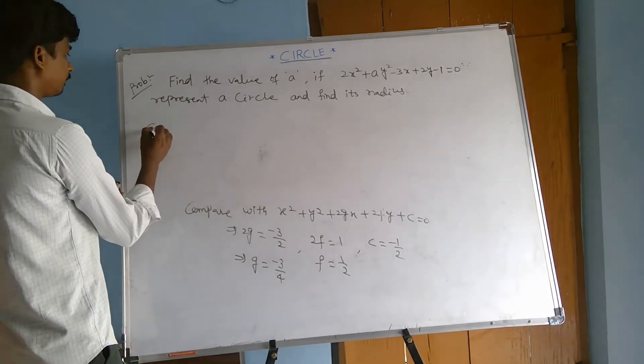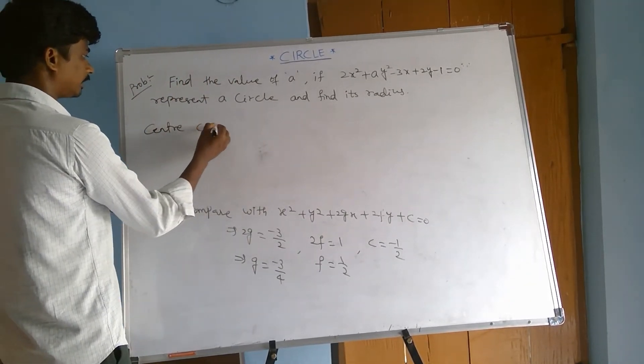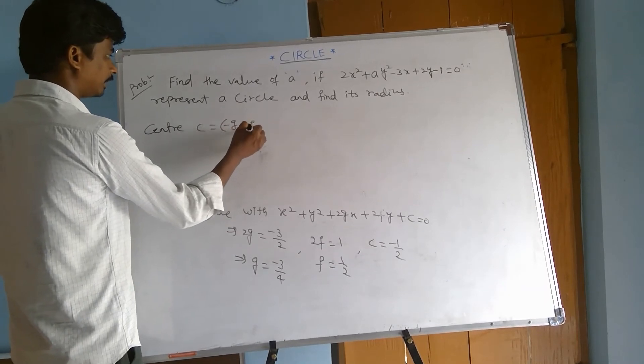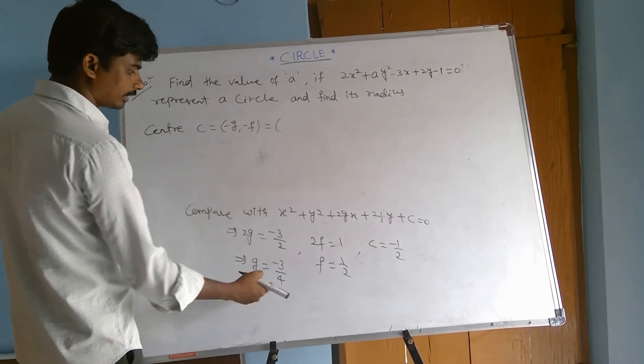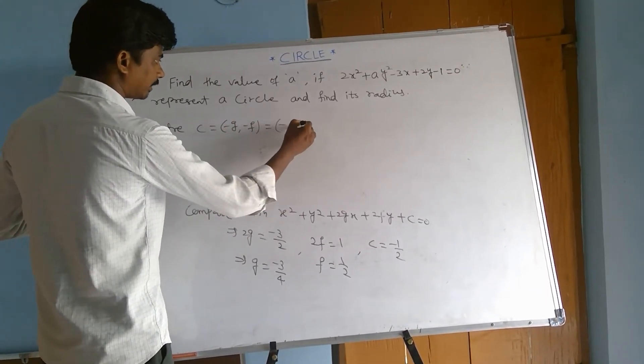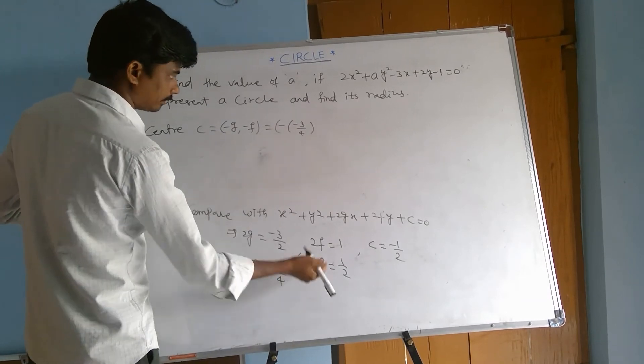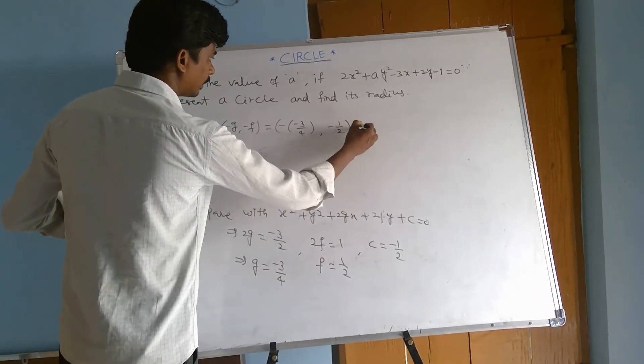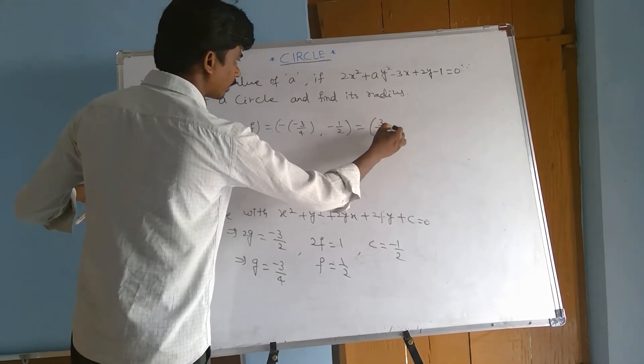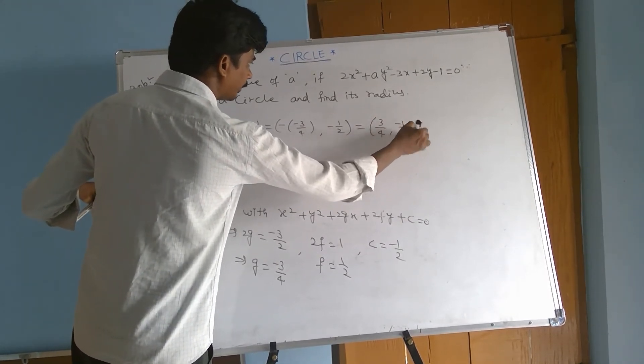And the center is minus g comma minus f. That equals minus of minus 3 by 4, minus 1 by 2. That equals 3 by 4 comma minus 1 by 2.